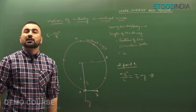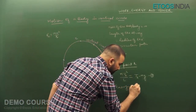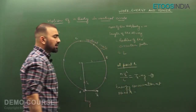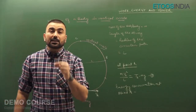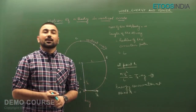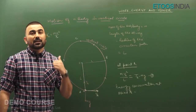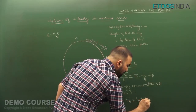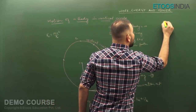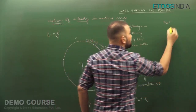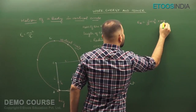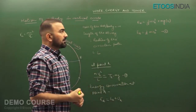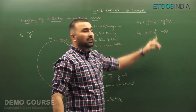Now energy conservation at point A. When the bob is at the lowest point, it has no height attained, so potential energy is zero. Total energy at A: E_A = kinetic energy at A plus potential energy at A. Therefore, E_A = ½Mv_A² + Mg×0 = ½Mv_A². This is taken as equation number two.